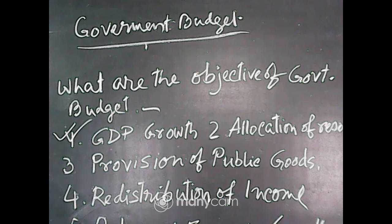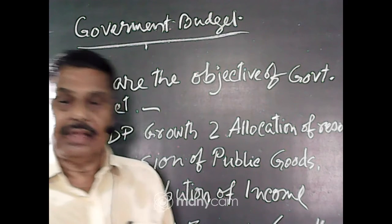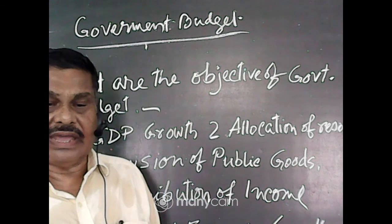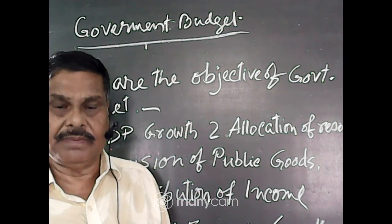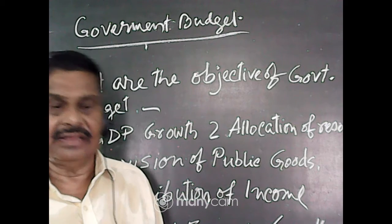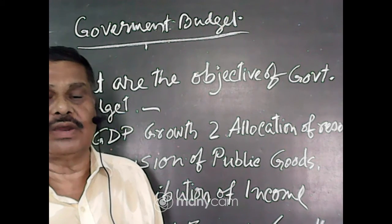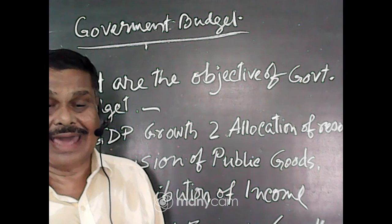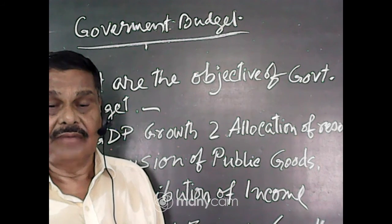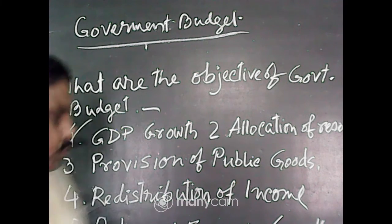Redistribution of income means taking a part of the income from the higher-income group of the country and redistributing it among the poorer section of the people so that they can meet their basic living needs.